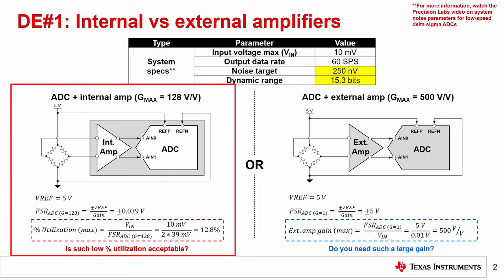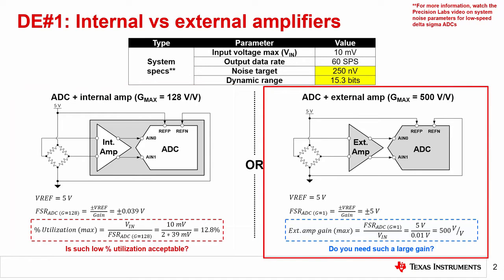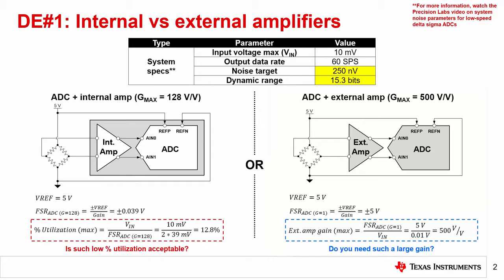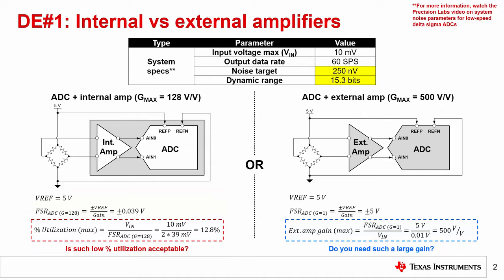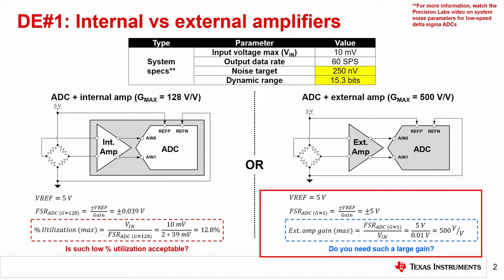In this example, we will look at the choice of using an ADC with an integrated amplifier, as shown on the left, compared to an ADC with an external amplifier, as shown on the right. ADCs with integrated amplifiers have limited gain settings that might not allow you to use the ADC's full-scale range. For these system specs, an ADC with a maximum integrated gain of 128 only allows you to use 12.8% of the ADC's full-scale range. On the other hand, the external amplifier gain can be set to virtually any value to help maximize ADC FSR, and you would need a gain of up to 500 to reach 100% utilization.